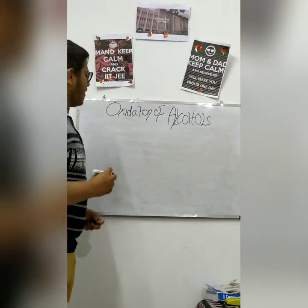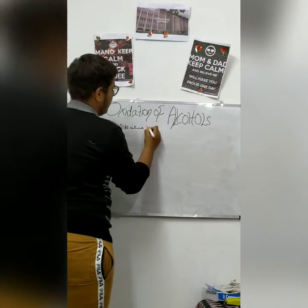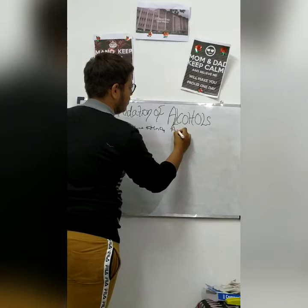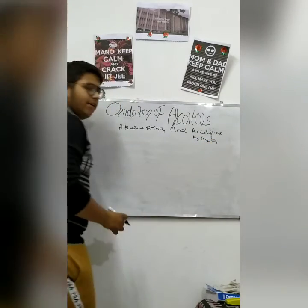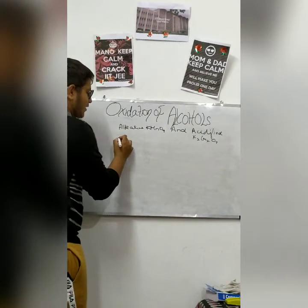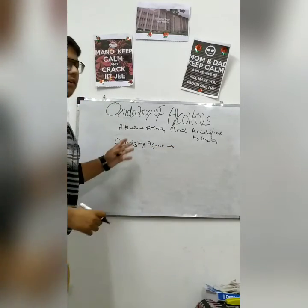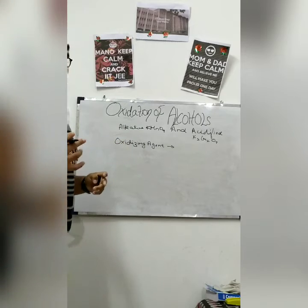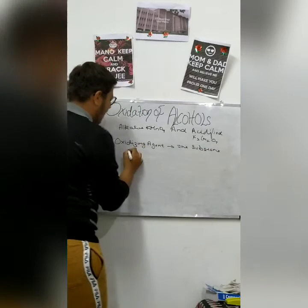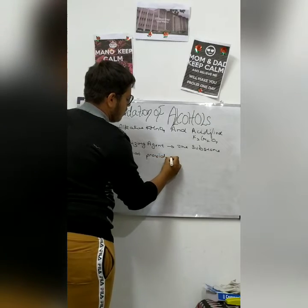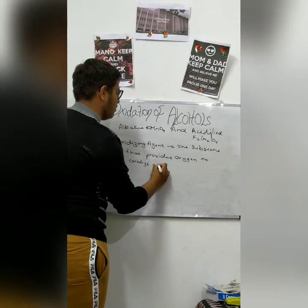We have studied that alkaline KMnO4 and acidified K2Cr2O7 are oxidizing agents. What is an oxidizing agent? Oxidizing agents are the substances that provide oxygen to oxidize other compounds.